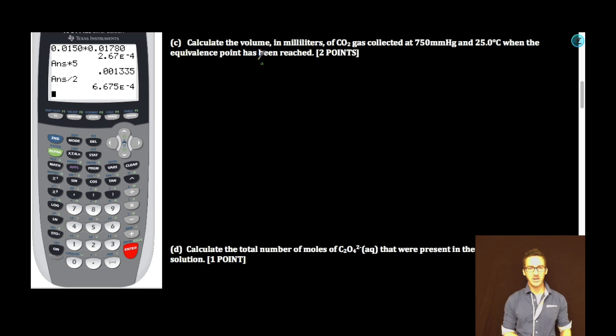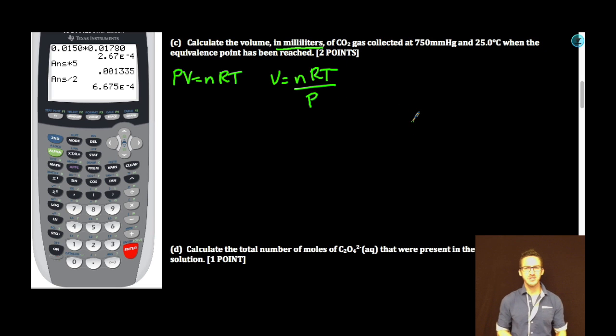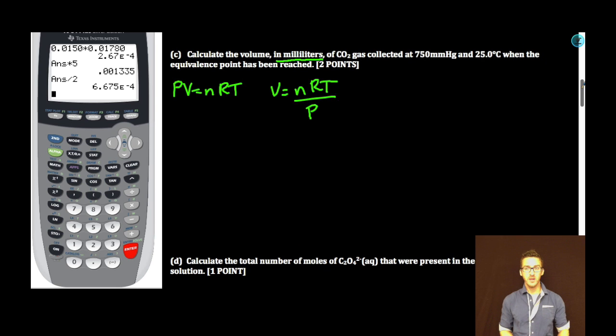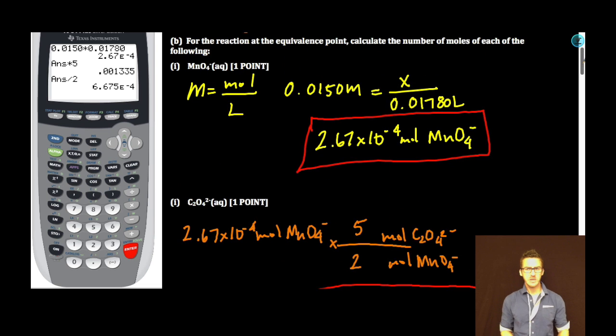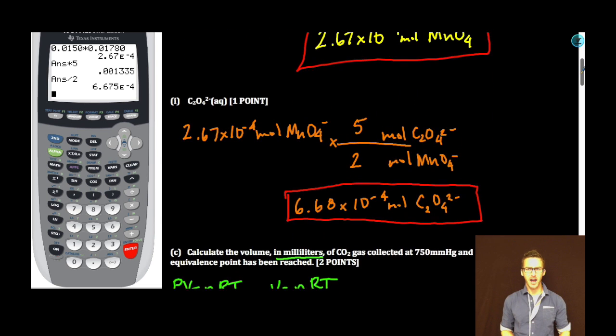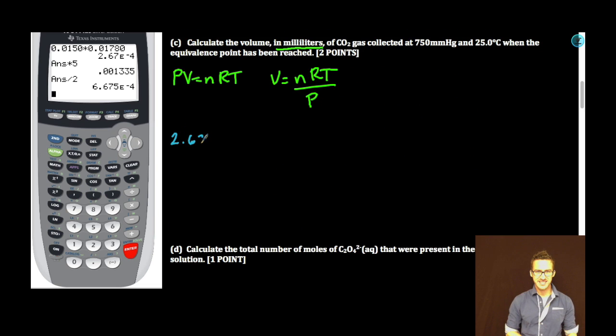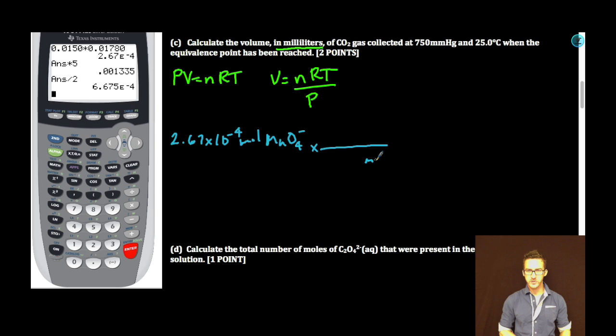Brings us to part C. Calculate the volume in milliliters of CO2 gas collected at 750 mmHg and 25.0 degrees Celsius when the equivalence point has been reached. Anytime we're talking about a gas and we're given volume, pressure, temperature, probably going to use our good friend PV=nRT. It's asking us to solve for volume, so I rearranged my equation. First thing I need to solve is number of moles of CO2 gas collected when the equivalence point has been reached. Let's think back to the previous two parts. You can use either moles of permanganate or moles of oxalate. I'm going to use moles of permanganate ion, which is 2.67 times 10 to the minus 4 moles of permanganate. I'm going to convert that to moles of CO2.